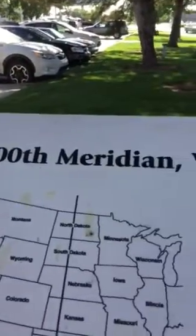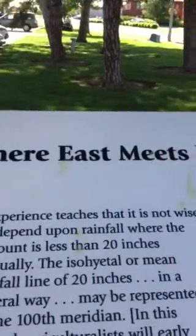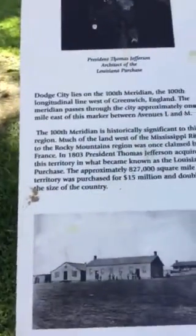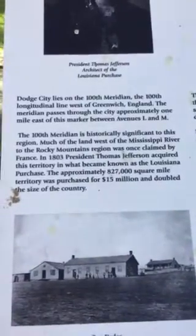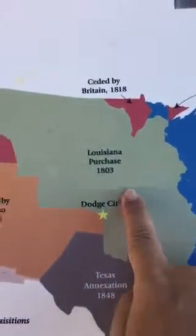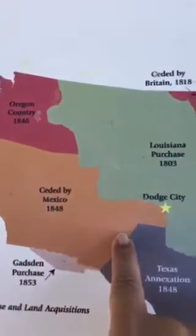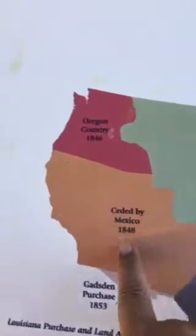The North City is where it meets the West. The story goes... You can see this territory is between the United States, and it's by France, and it's Mexico at the time. The North City is right in the middle.